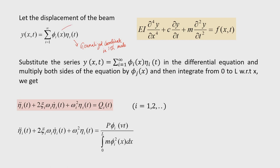φᵢ(x) is the mode shape of the i-th mode. This is applicable for any type of beam — since we have taken an Euler-Bernoulli beam, it may represent a cantilever or any other beam with different boundary conditions. c is the damping per unit length, taken proportional to mass so that decoupling can be done using the orthogonality condition.